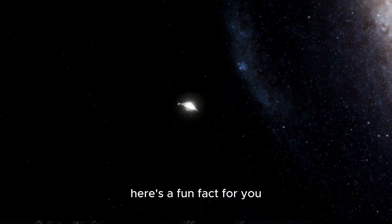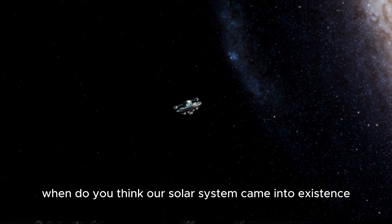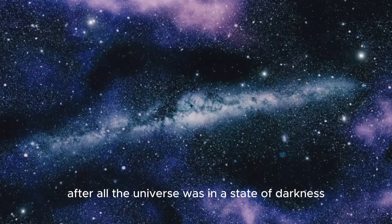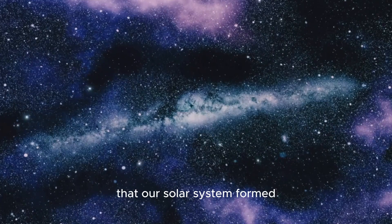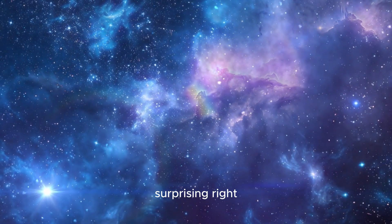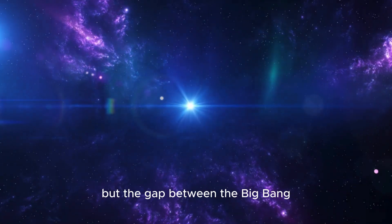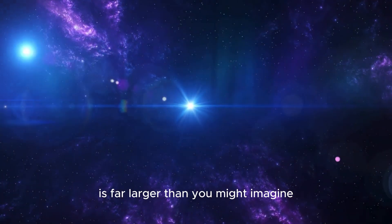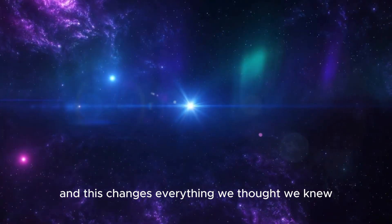Here's a fun fact for you. When do you think our solar system came into existence? After all, the universe was in a state of darkness for about 400 million years. Well the truth is that our solar system formed roughly 9 billion years after the Big Bang. Surprising, right? Sorry sci-fi movies but the gap between the Big Bang and the formation of our solar system is far larger than you might imagine. And this changes everything we thought we knew.